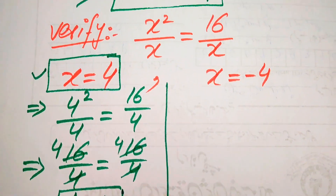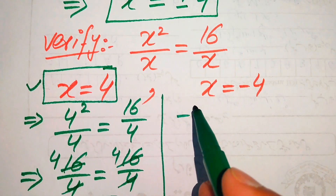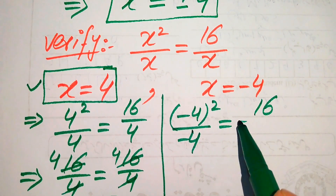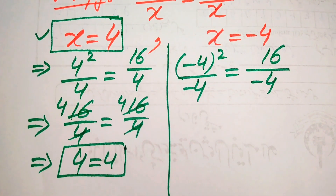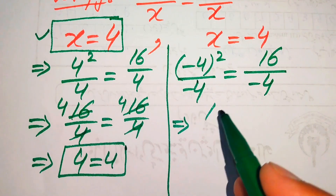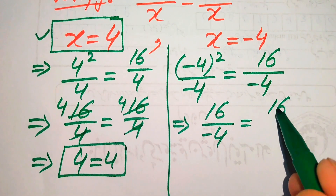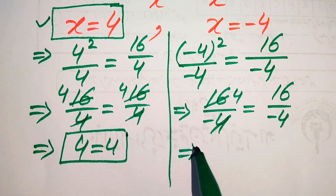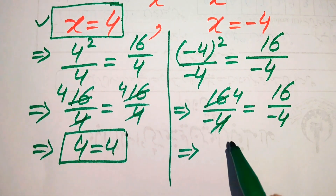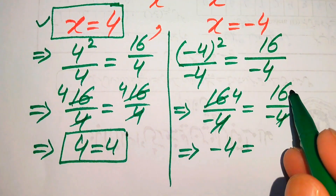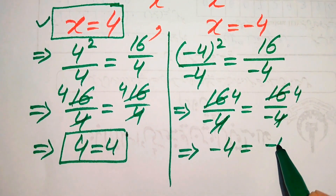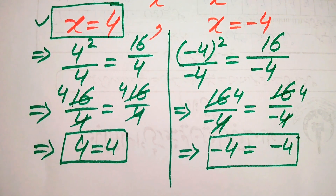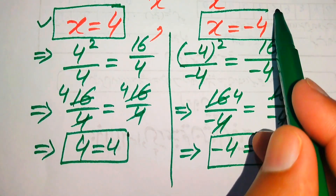Now we check x equals negative 4. We put it on both sides of the equation: negative 4 squared divided by negative 4 equals 16 divided by negative 4. Negative 4 squared becomes 16 over negative 4 on the left, and 16 over negative 4 on the right. This gives negative 4 equals negative 4, so x equals negative 4 also satisfies our given equation.